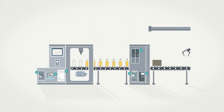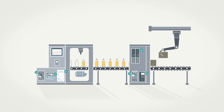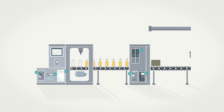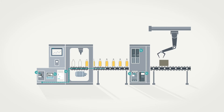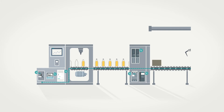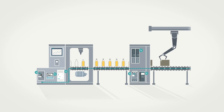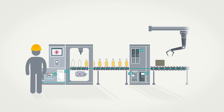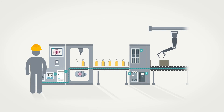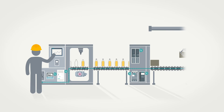In your system, you have the advantage of being able to access your energy data in real time in connection with production data, from the machine to the control room, thanks to the automated capture process. You can react directly to energy waste — for example, when a machine shows signs of wear.